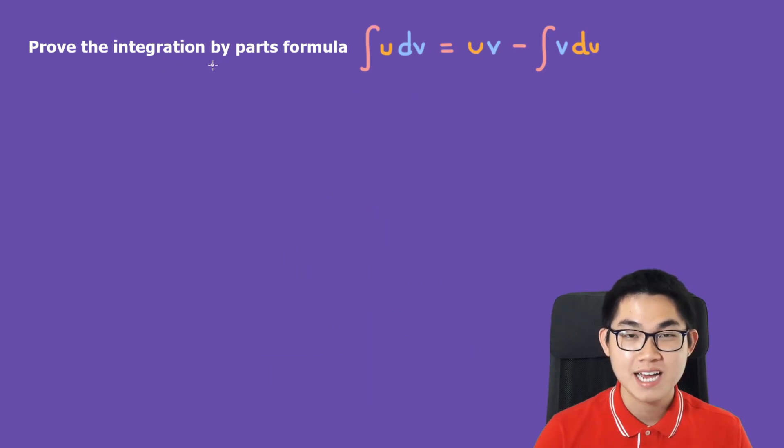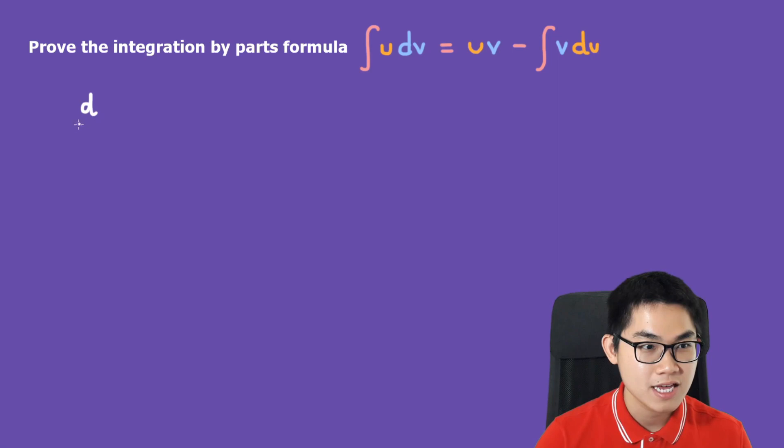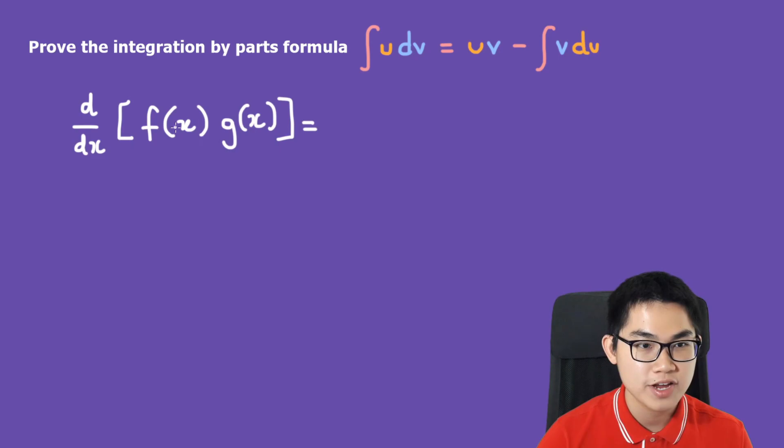The integration by parts formula actually comes from the product rule for differentiation as we learned in calculus one. The product rule for differentiation is d/dx of f(x) times g(x), where both f(x) and g(x) are continuous functions.